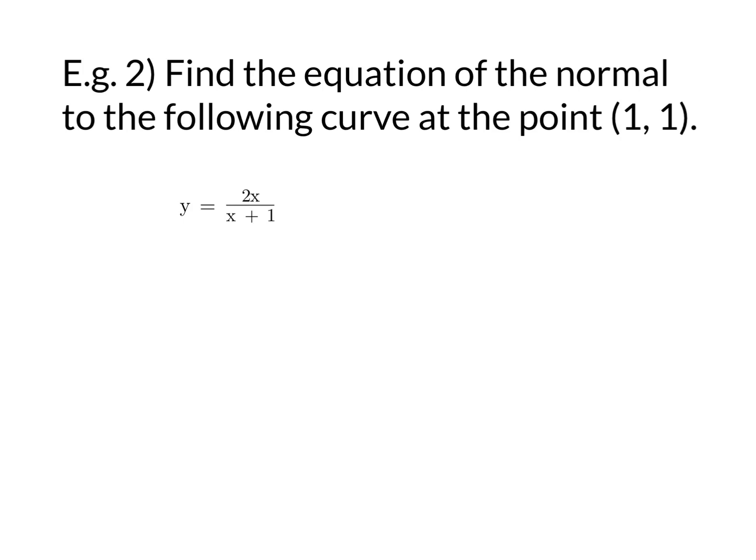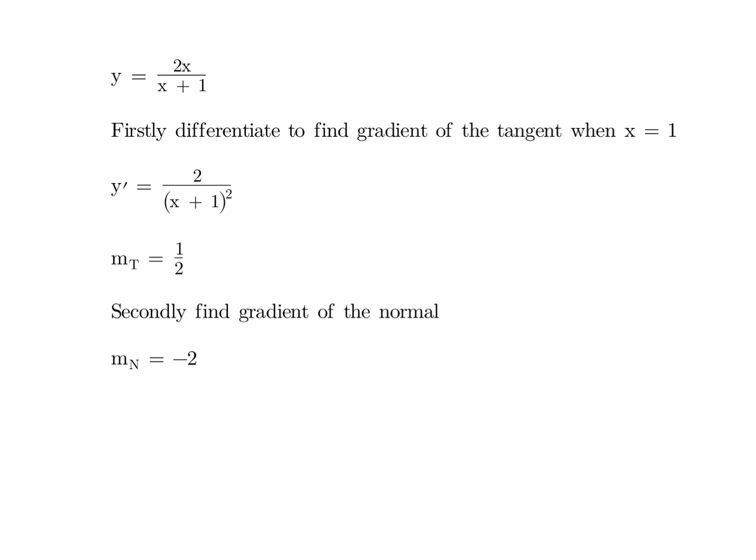For our second example, we're going to find the equation of the normal to the following curve at the point 1, 1. This is the one that we differentiated earlier, so we won't go through the actual differentiation step. A reminder that the first thing we do is find the gradient of the tangent when x equals 1. Our derivative from the past example turns out to be 2 over x plus 1 squared. Substitute 1 in there, and you get 2 over 4 or a half.